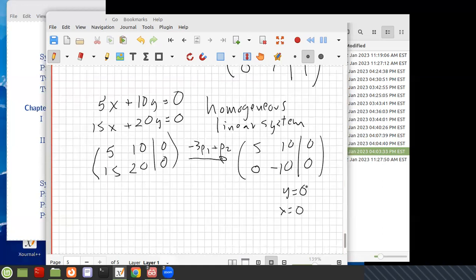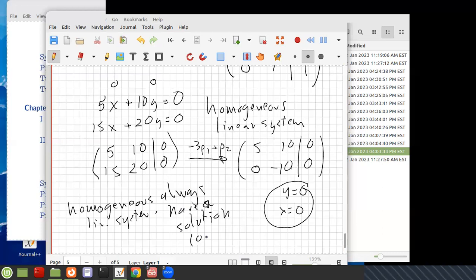Any homogeneous linear system always has a solution. You can never have a contradiction because I can always put in the solution 0 and 0. So homogeneous linear systems always have a solution, namely the zero solution, where all the components are 0.